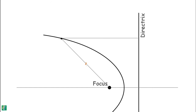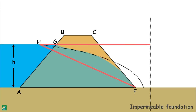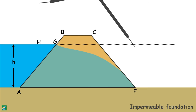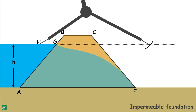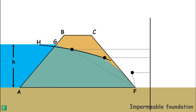The property of a parabola states that the distance of any point on the parabola from the directrix and its focus are equal. Point H is on the parabola and F is the focus. To obtain the directrix, we extend the upstream water level and, using a compass of length HF, make an arc that cuts this extension. From this point we draw a perpendicular to the base of the dam to get our directrix. We then determine intermediate points of the curve using the same parabola property and join them to find our base parabola.